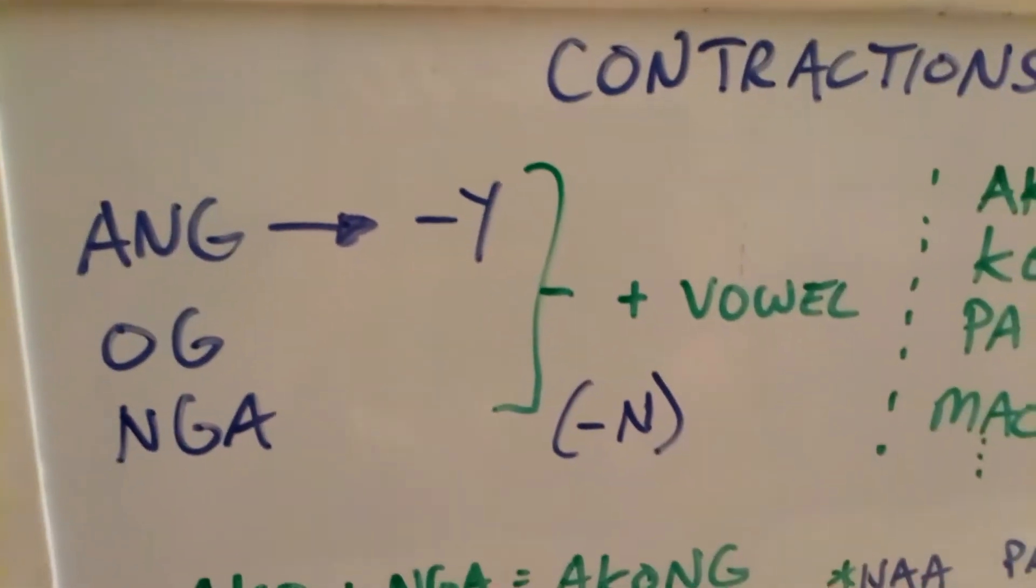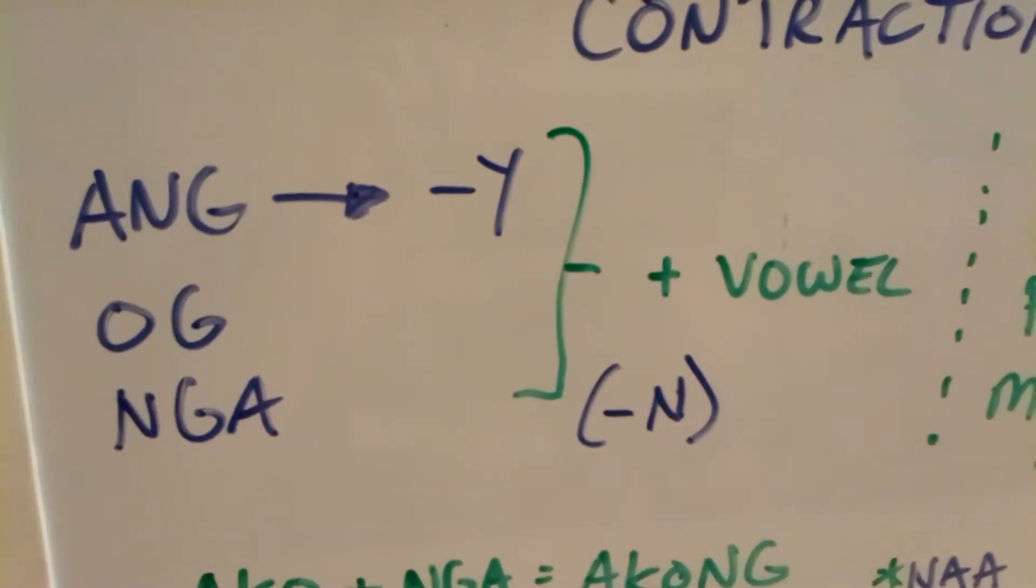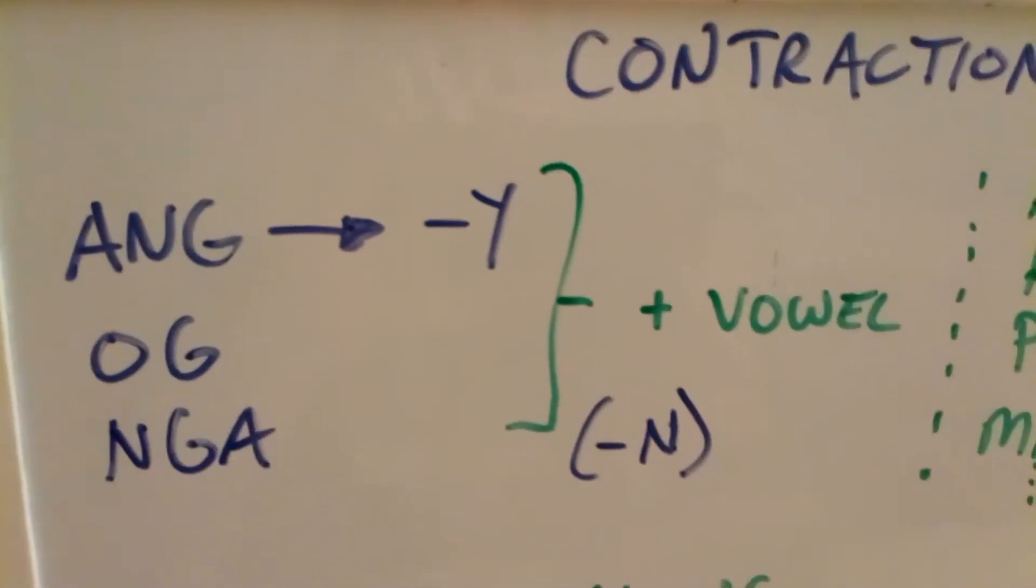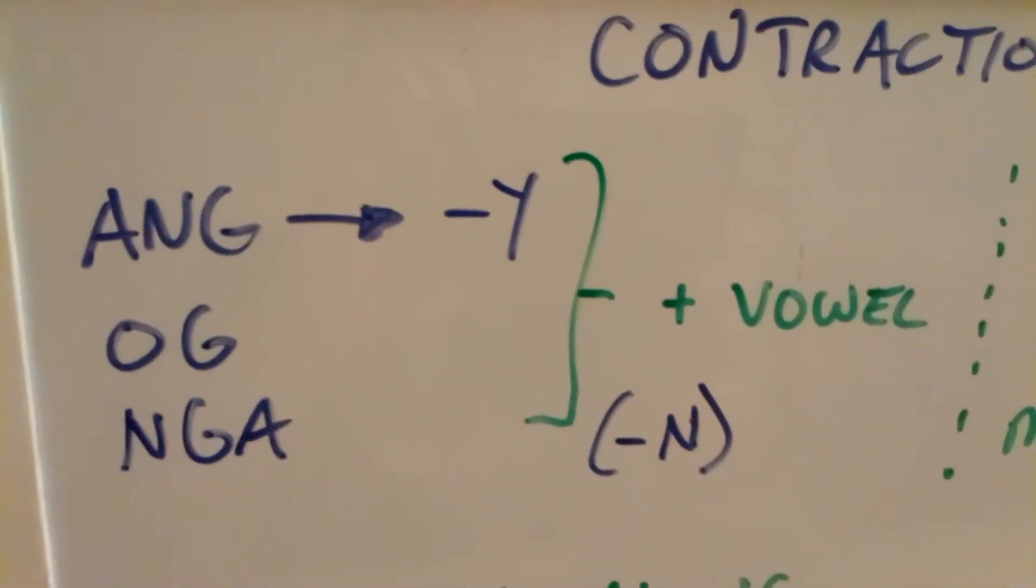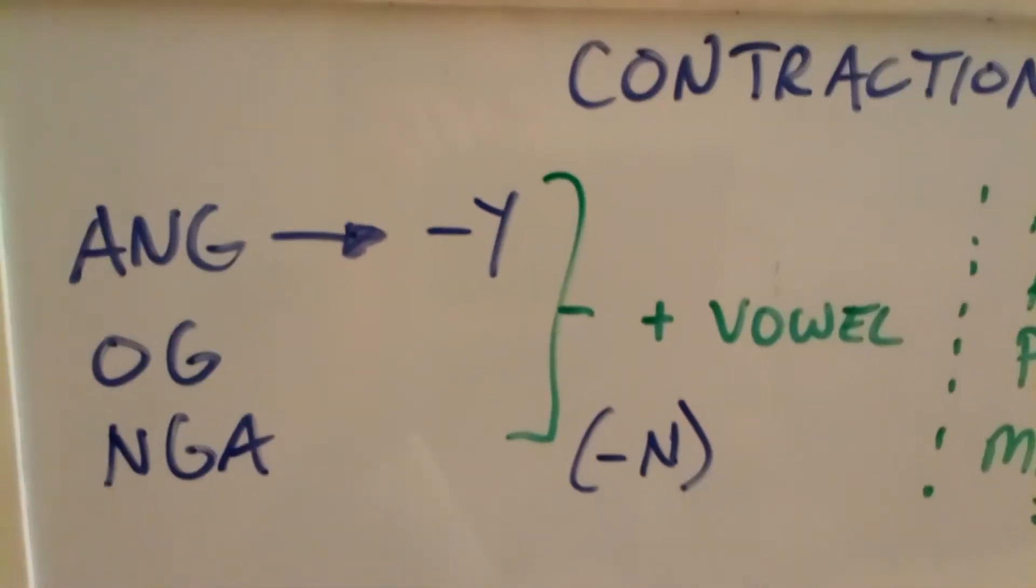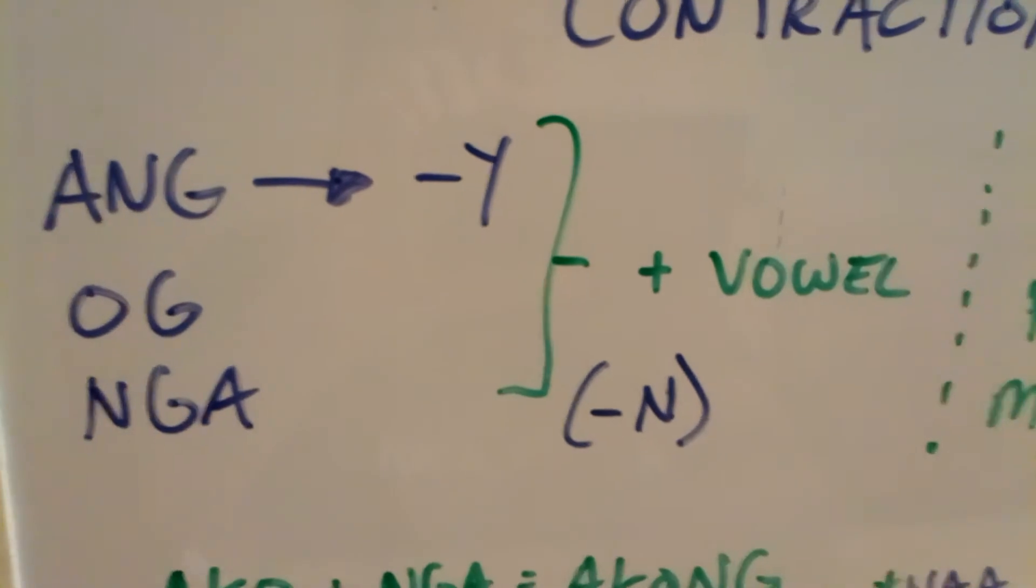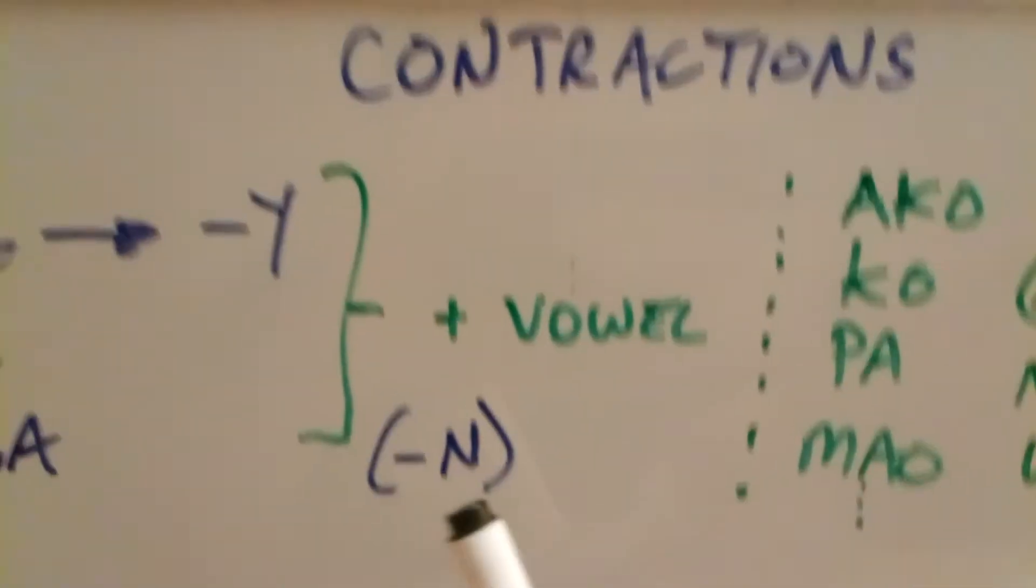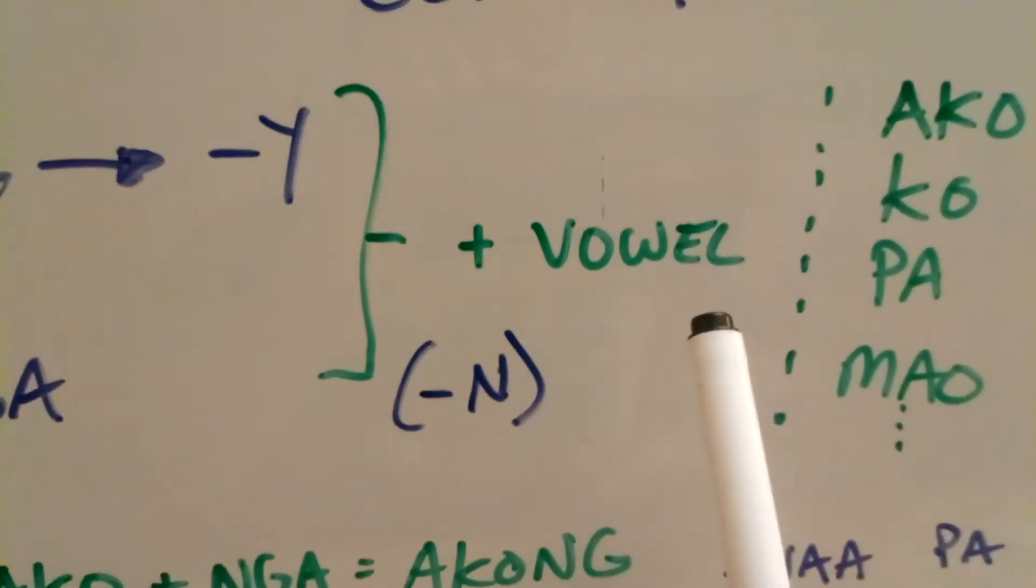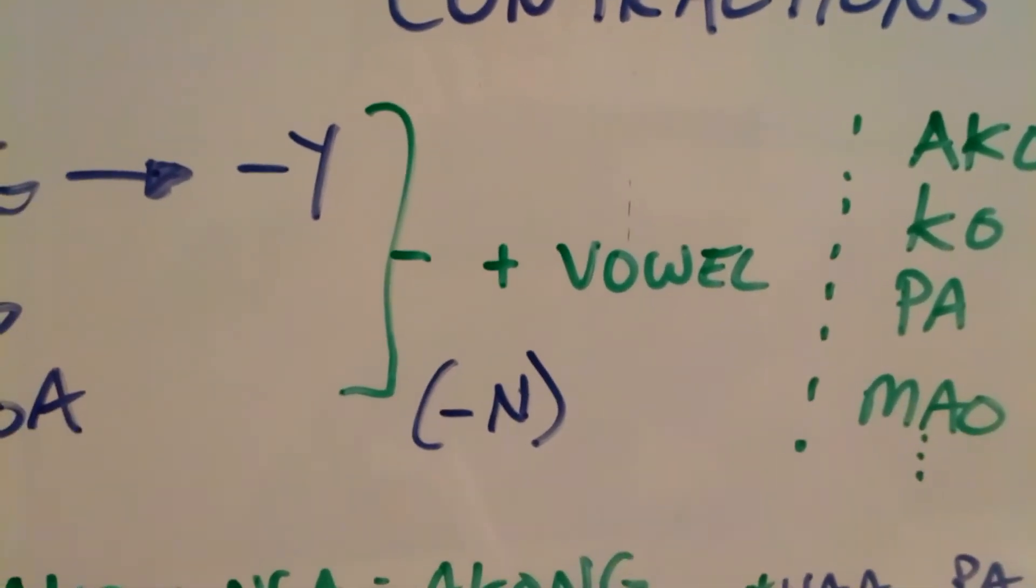In Cebuano, there are certain particles that contract because of natural flowing speech and how people articulate their speech. So some of these are examples of contracted particles: the ang, og, and the nga. When we're gonna use ang, it has to be the e-form of ang. And most often of times if you're gonna contract particles with a word, it has to end in a vowel. The word is gonna have to end in a vowel. That's important.